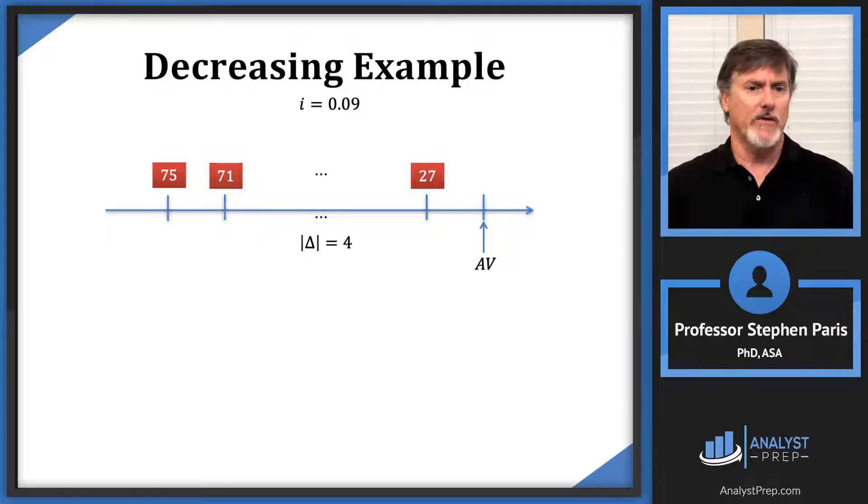Remember, delta was representing the common difference, so I could think of the common difference as being minus 4, so the absolute value I'll write as 4. The first thing I would do is look at that last payment of 27 and think of that payment of 27 as 4 times (1 plus something), and that something has to be 23.